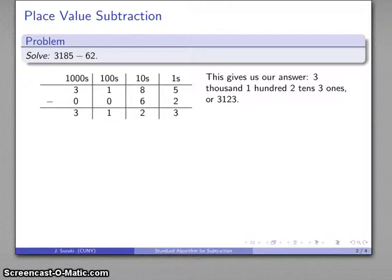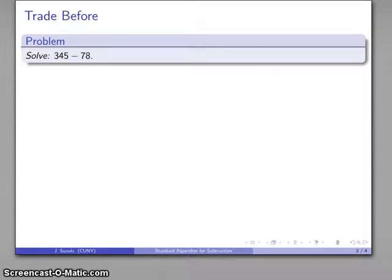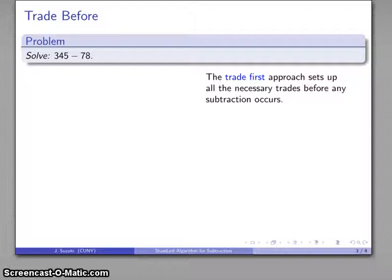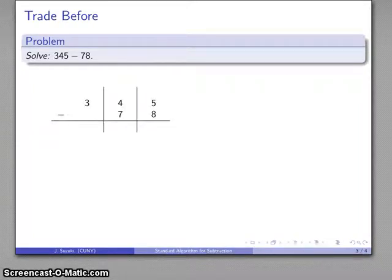Well, the thing to notice here is that any time we had to subtract an amount, we always had enough to perform the required removals. But, of course, sometimes we won't. And this leads to a variation on the standard algorithm, part of the standard algorithm, really, called trade before. And what it means is that we're going to set up all the necessary trades before we perform any subtraction. We want to make sure that we can do the subtraction without having to stop in the middle. So we just want to make sure that we have all the required pieces before we do the subtraction.